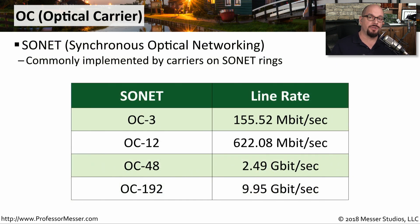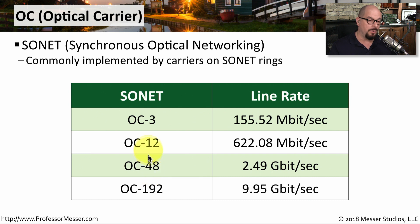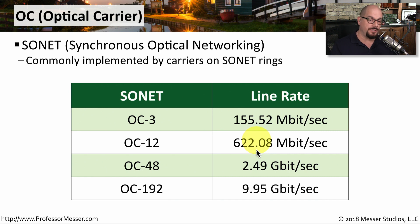As carriers moved away from the circuit-switched networking of T1 and T3, they moved into more packet-switched networking with SONET. SONET is synchronous optical networking, and it's often implemented as rings in a large geographical area. There are a number of different line rates on SONET networks, usually referenced by optical carrier number, or OC number. OC3 has a line rate of 155.52 megabits per second, OC12 is 622 megabits per second, OC48 moves up to 2.49 gigabits per second, and OC192 can support a line rate of almost 10 gigabits per second.